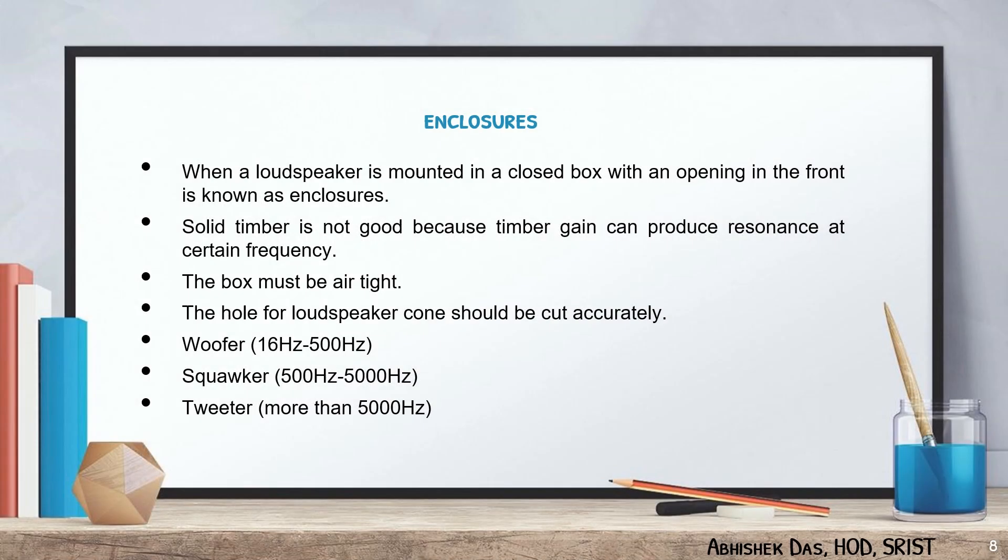Now we are going to discuss about the enclosure. An enclosure is a loudspeaker mounted in a closed box with an opening in the front. The box serves the purpose of a finite baffle because the wave from the back of the cone will not be able to come to the front side. The box must be air tight, and the hole for the loudspeaker cone should be cut accurately. The enclosure has three characteristics: the woofer with a frequency range of 16 Hz to 500 Hz, the squawker with 500 Hz to 5000 Hz, and the tweeter at more than 5000 Hz.